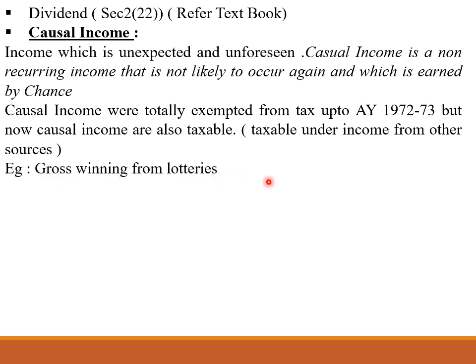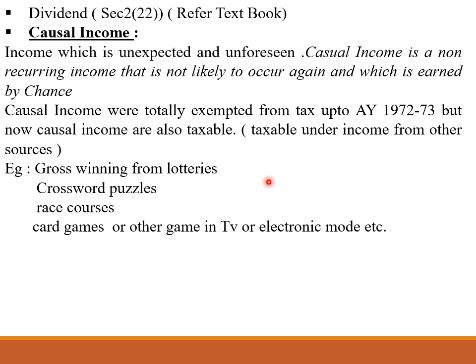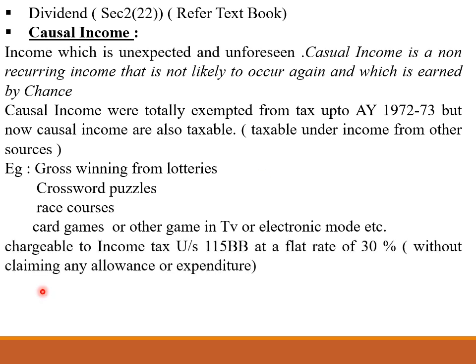Examples of casual income include gross winnings from lotteries, crossword puzzles, race courses, card games, or other games on TV or electronic mode — for example, Kaun Banega Crorepati. This casual income is chargeable to income tax under Section 115BB at a flat rate of 30%. So whatever income you earn from a lottery, 30% income tax is charged on it without claiming any allowances or expenditure.